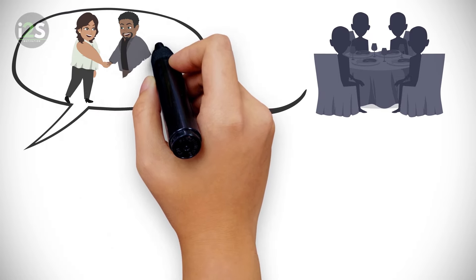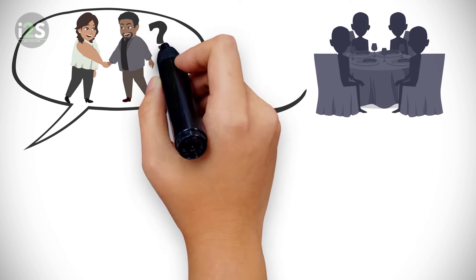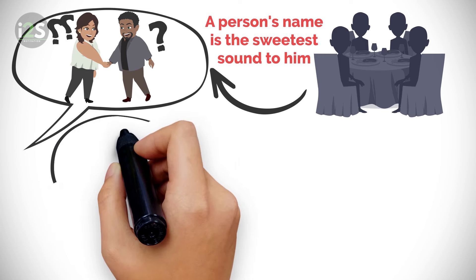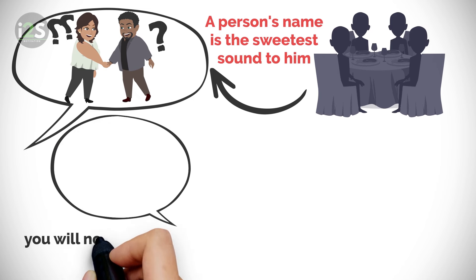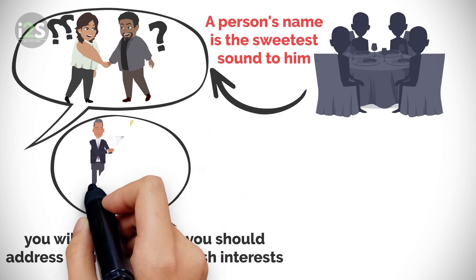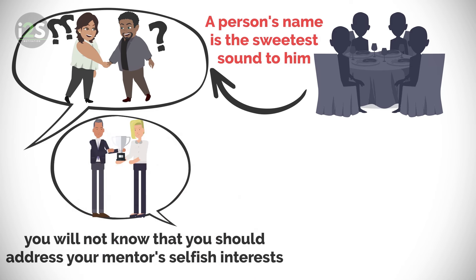For example, without social intelligence, you will never pay attention to people's names when you meet them, because you don't know that a person's name is the sweetest sound to him. Without social intelligence, you will not know that you should address your mentor's selfish interests if you want him or her to help you achieve mastery.